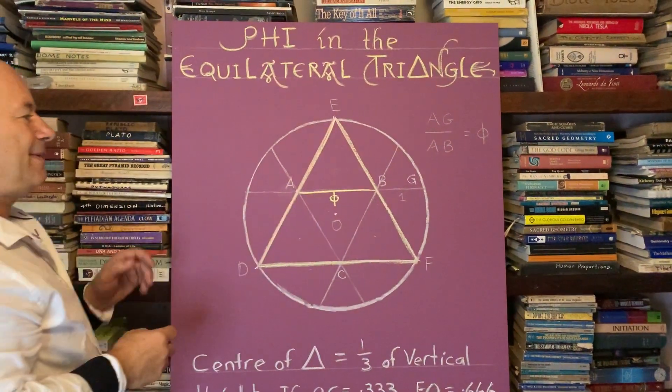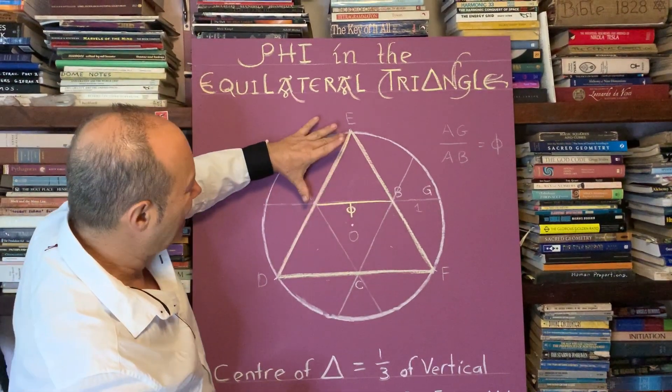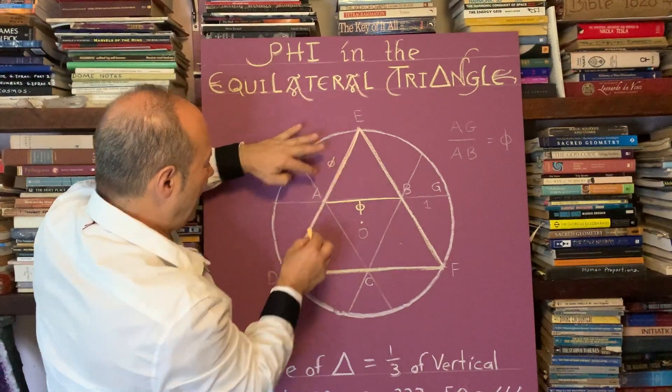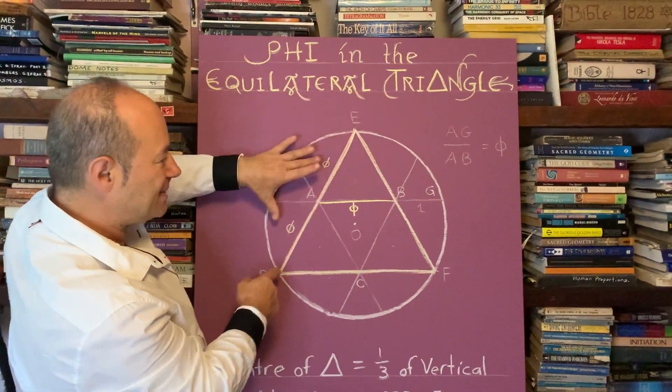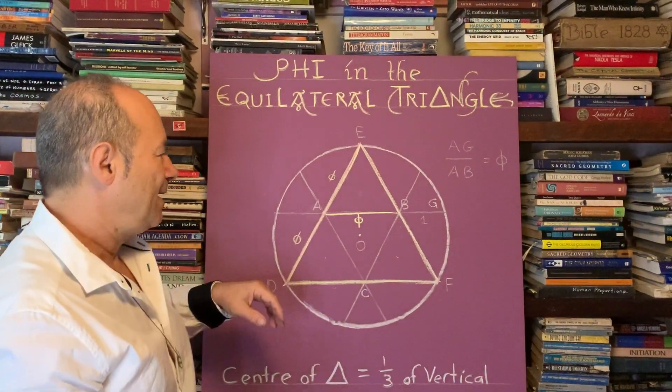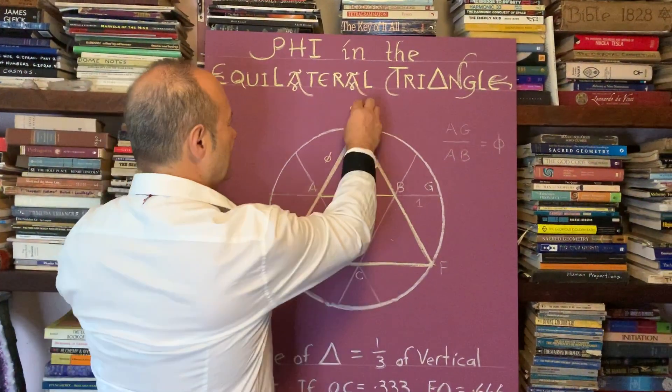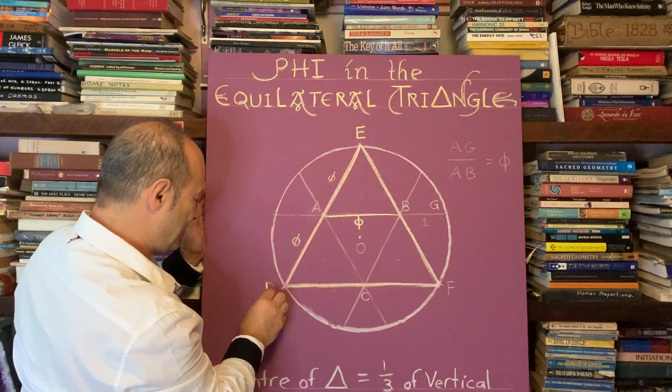That distance going across there is 1.618, so that's phi, and this is also phi. The length of each side in this situation is 2 phi, 2 times 1.618. When we show diagrammatics like this, we need to give the points or vertices a name.